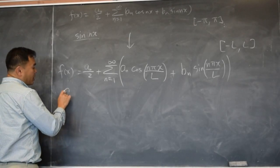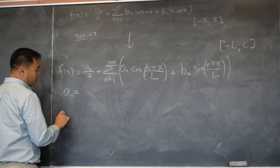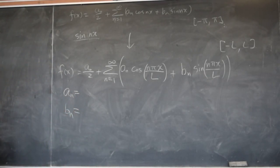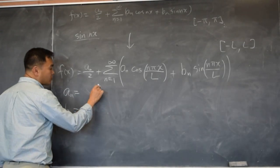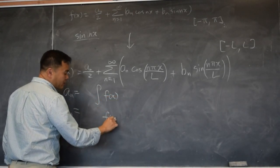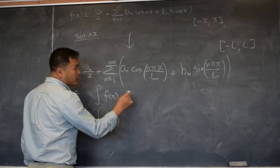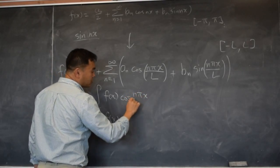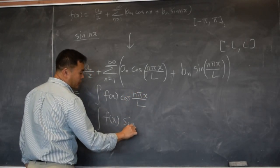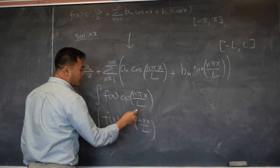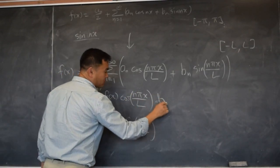And then we need formulas to get an and bn. We need formulas for an and bn. And just like before, we have to multiply the function against these cosine and sine functions. So cosine n pi x over L, sine of n pi x over L. As we multiply, then you have to integrate.